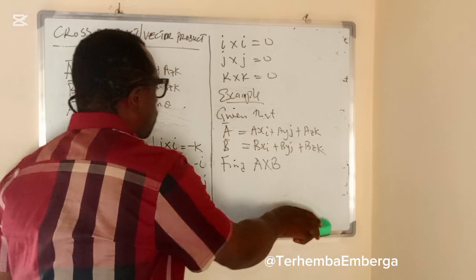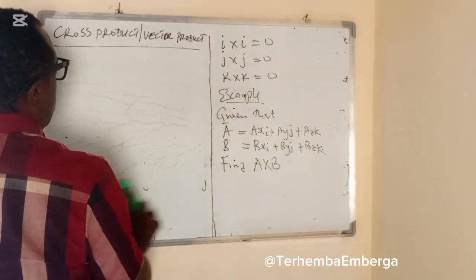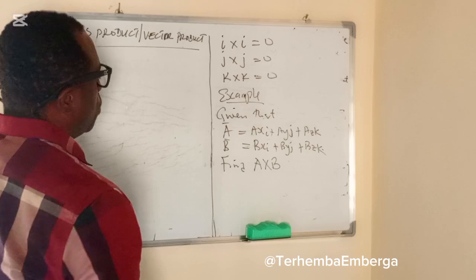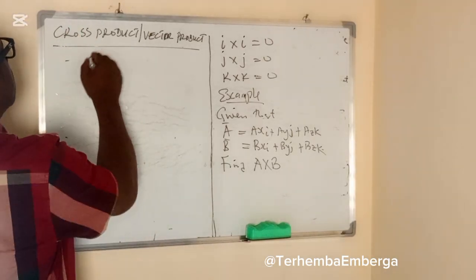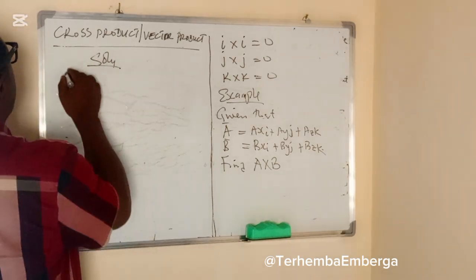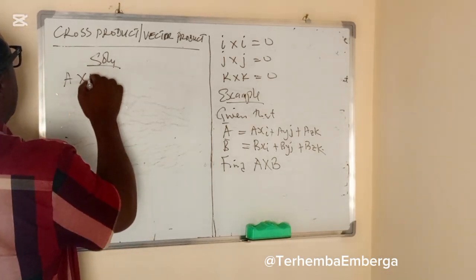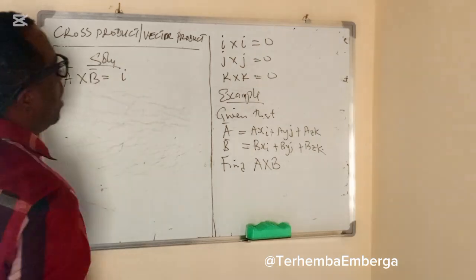Here we go. I'm going to use matrix approach in this case. So A cross B would be equal to IJK